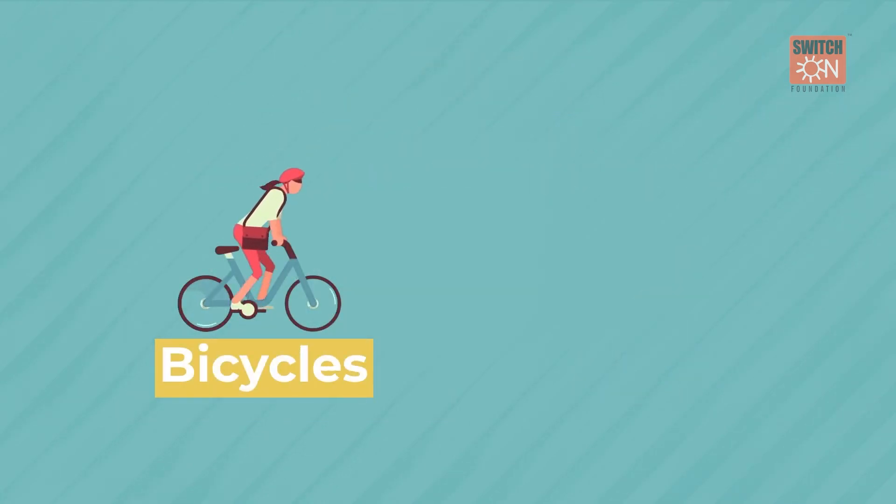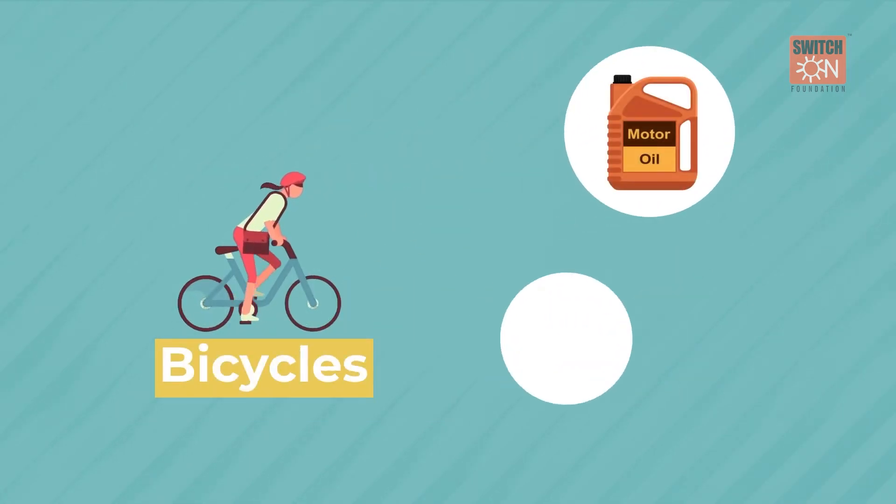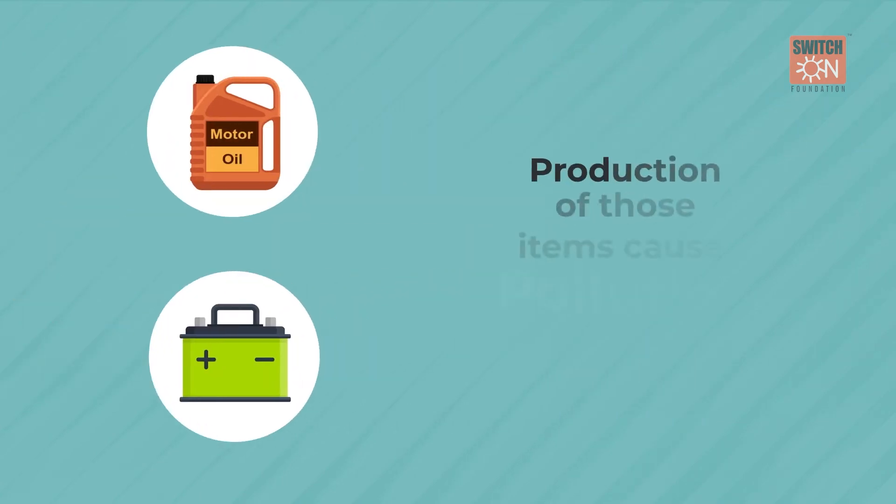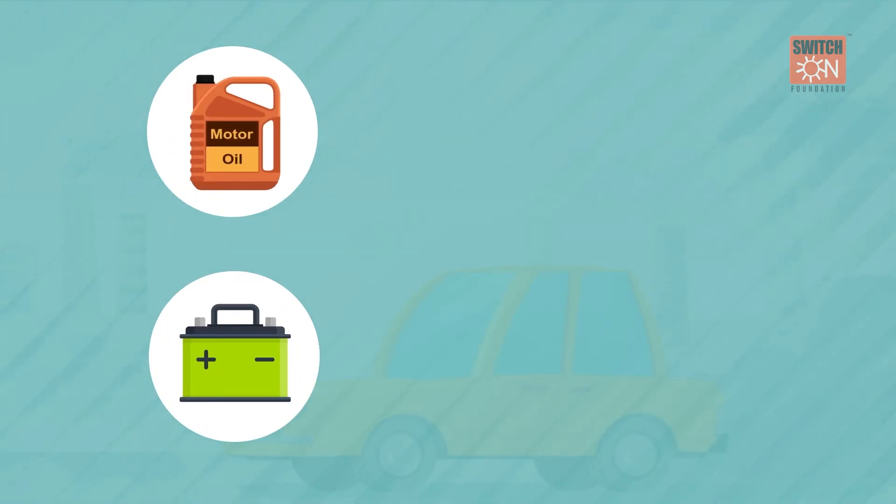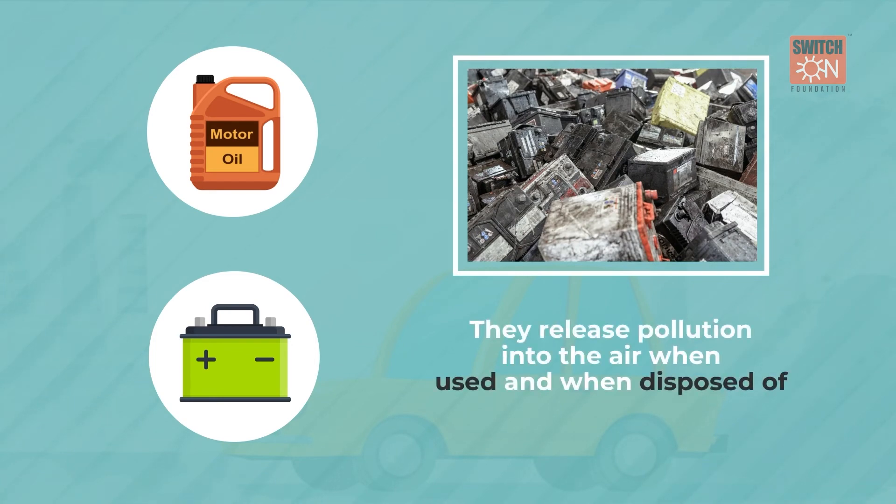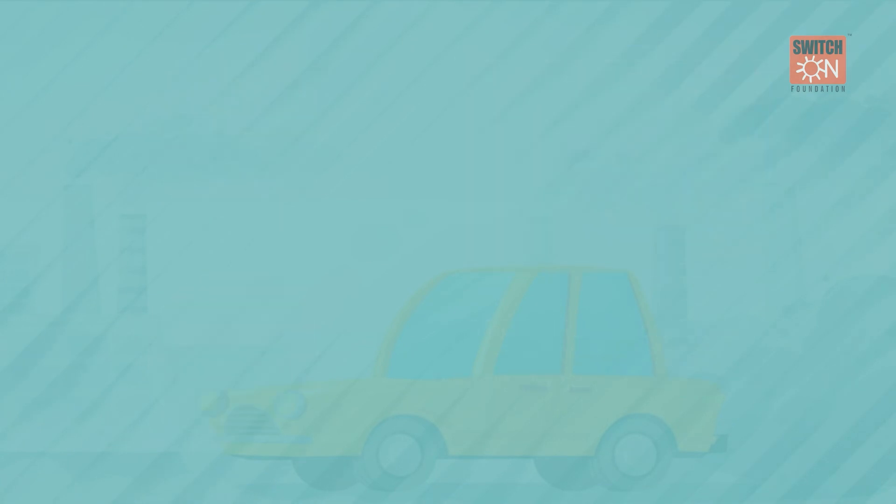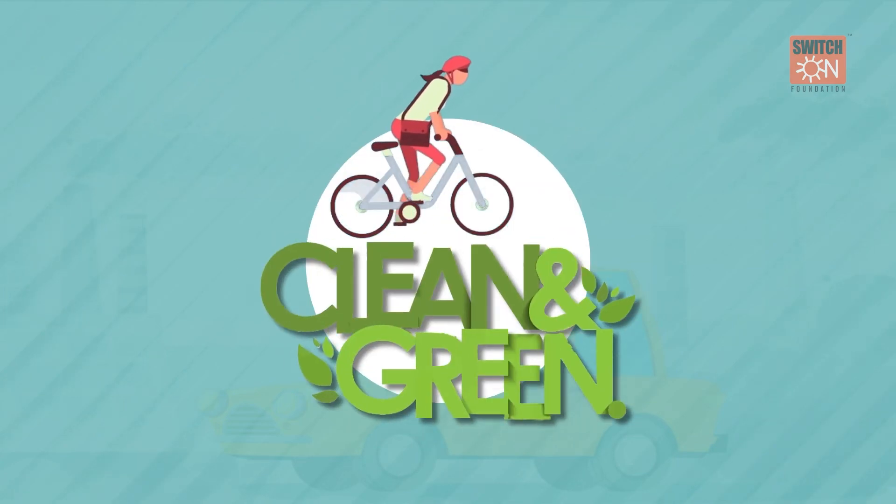Bicycles don't require any motor oil or batteries to operate. Not only does production of those items cause pollution, but they release pollution into the air when used and when disposed of. Bicycles are a clean and green solution to the problem.